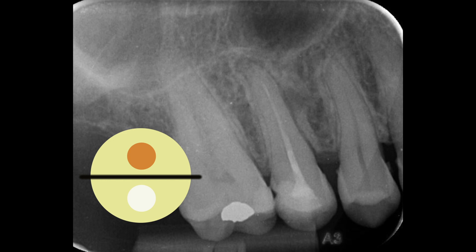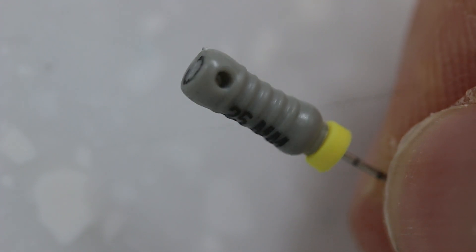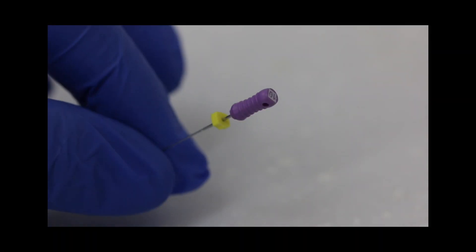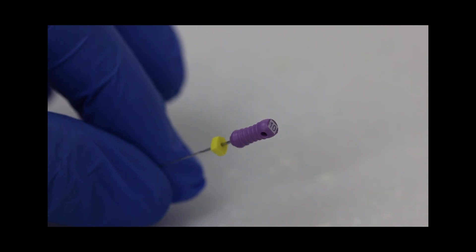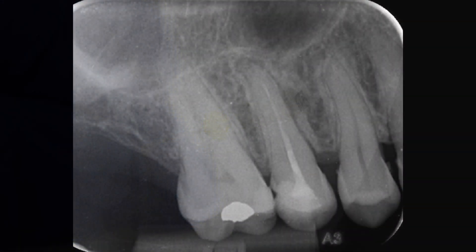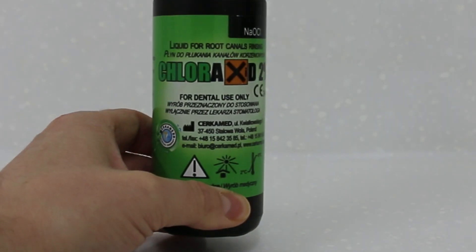To negotiate the tooth we used C-plus files. If you're not aware of C-plus files, they are very stiff and have a cutting end, which is really useful down sclerosed canals. After the C-plus files, I instrumented with a size 10 K-file and a size 15 K-file. Once we got the size 8 C-plus file to length, the 10 and 15 actually went quite nicely. Once I had used my hand files 8, 10, and 15, I used a WaveOne Gold Red.